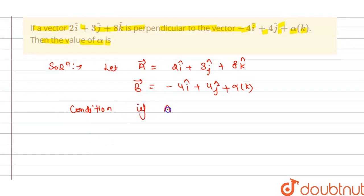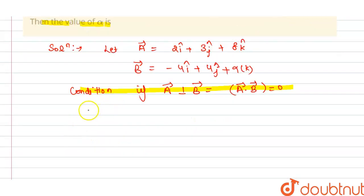So the condition for perpendicular vectors: if a vector is perpendicular to b vector, then their dot product must be equals to 0. So this is the condition for the dot product, a dot b.